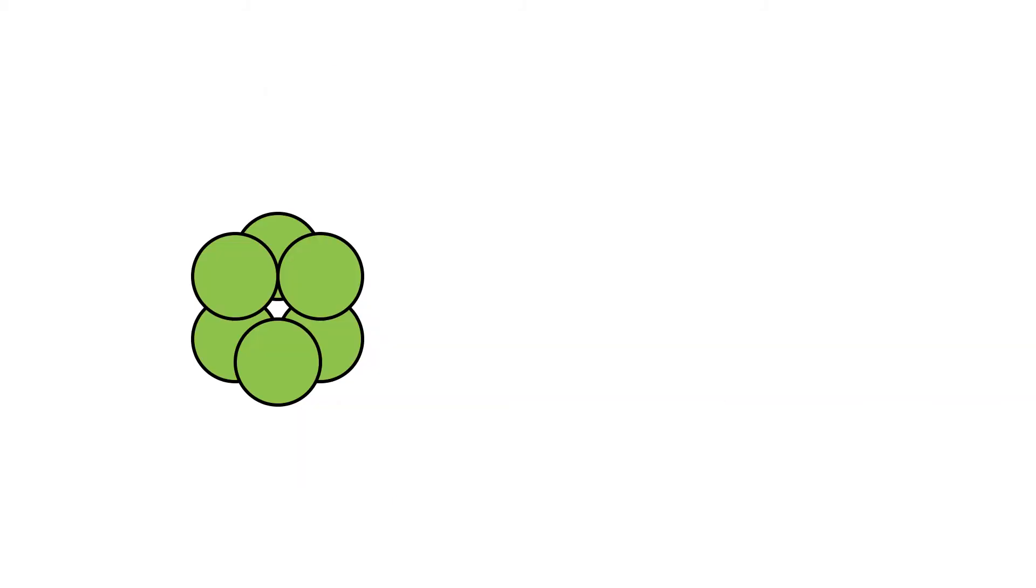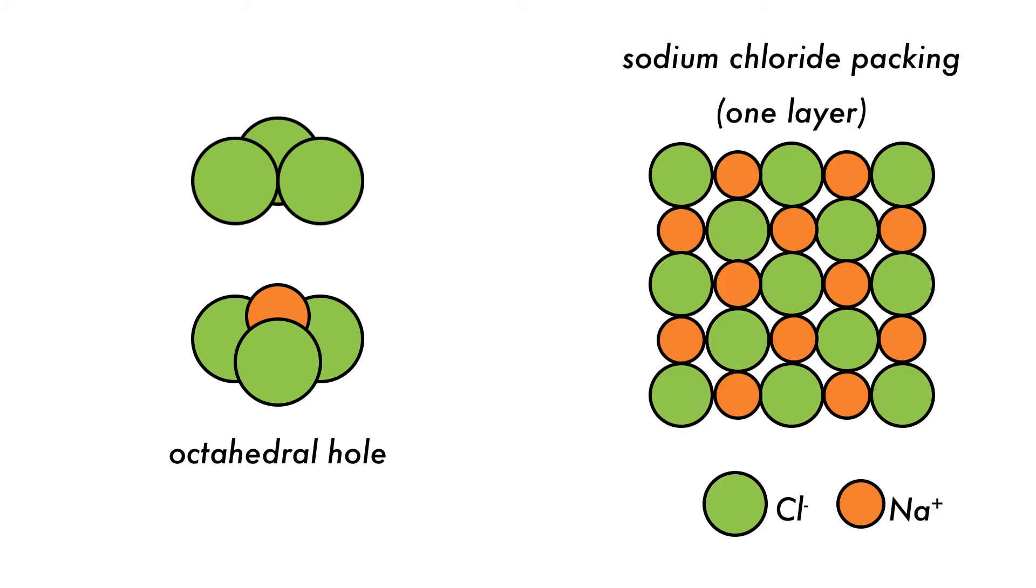The next hole is the octahedral hole. The basis for the octahedral hole is the FCC lattice structure. A typical example is sodium chloride. The larger chloride ions create the octahedral holes for the smaller sodium ions.